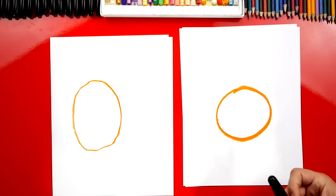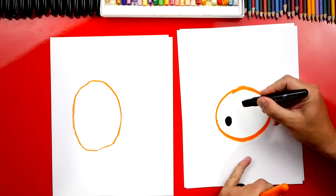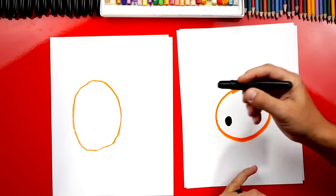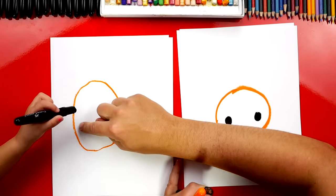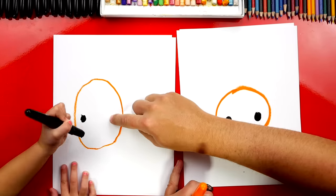Now we're going to draw the eyes. We're going to switch to our black crayon and we're going to draw a circle and color it in. Two circles for two eyes. We draw one right here and one right here. There's one eye and two eyes.